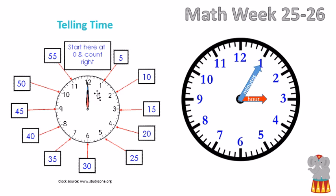If the short hand is pointing at the 1, it is in the 1 o'clock hour. But if both the short and long hand are pointing at the 1, then it is 1 o'clock. Because for the minutes, the 1 represents 5 minutes past the hour.